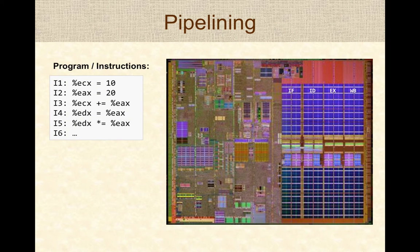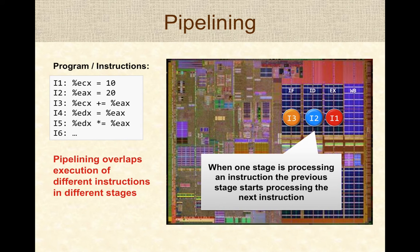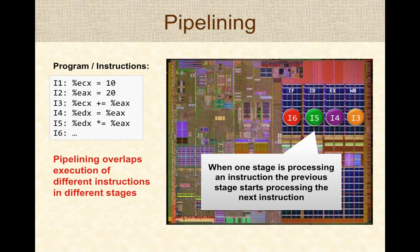Now let's look at the scenario where the CPU is designed to use pipelining. With the same instructions, pipelining overlaps the execution of different instruction stages, and the hardware continues to work on different instructions simultaneously. When instruction one moves from fetch to decode, the fetch unit immediately gets the next instruction. The pipeline keeps processing instructions, with different stages handling different instructions, keeping all stages busy and effectively using the hardware.